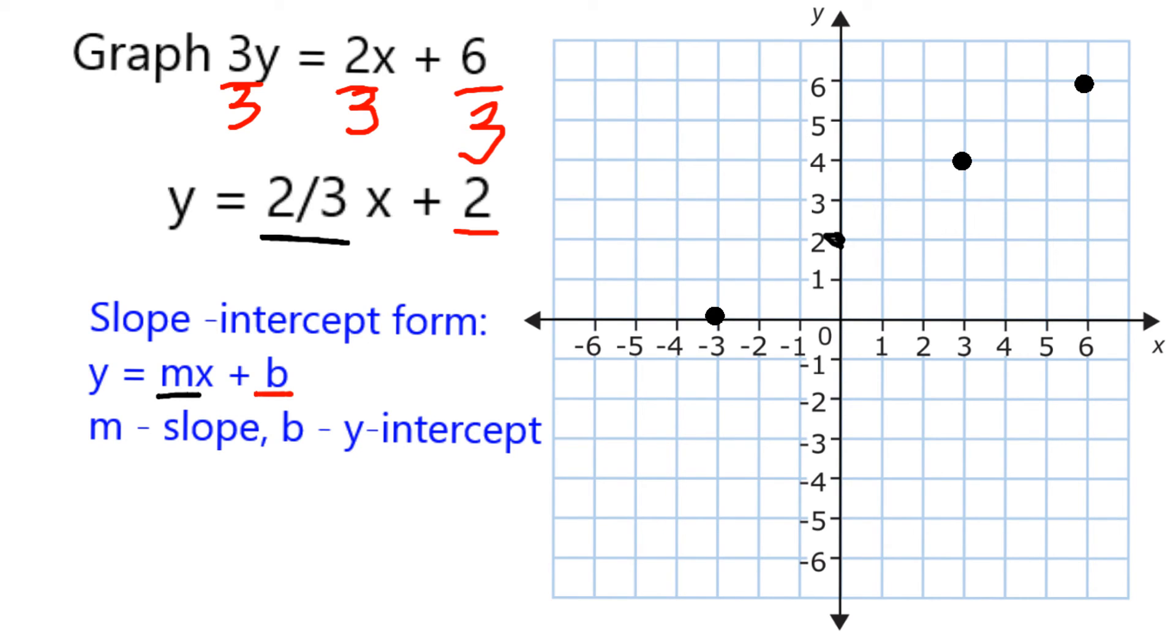And I can get one more of these in if I go down another 2 and back 1, 2, 3, and that does give me enough points to make a line.